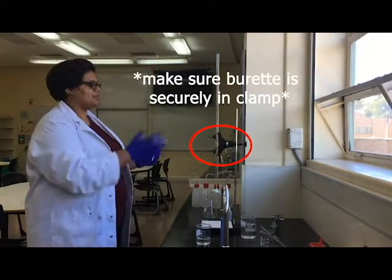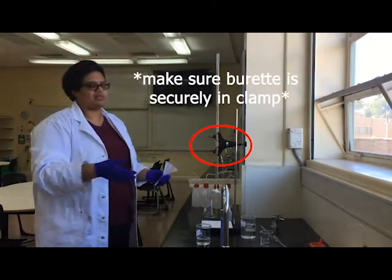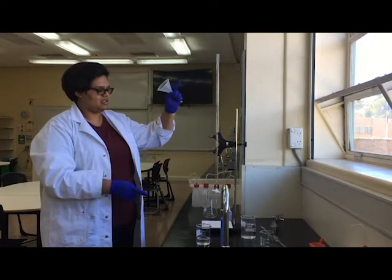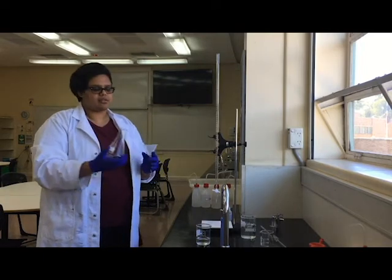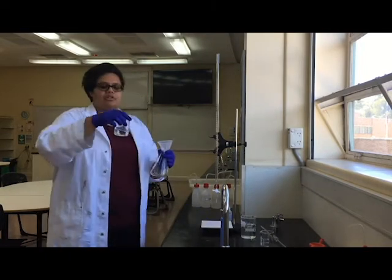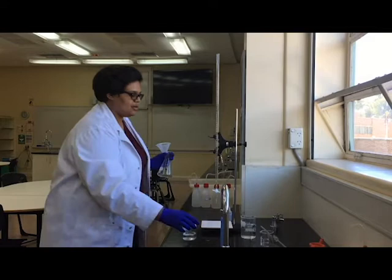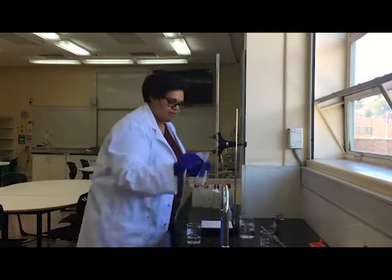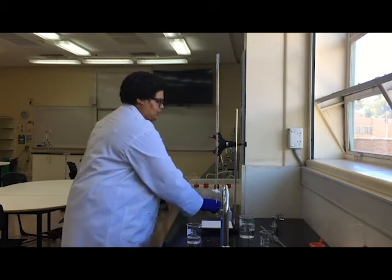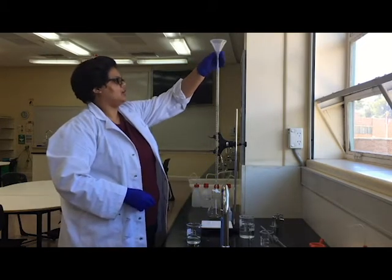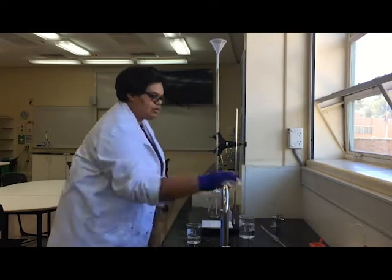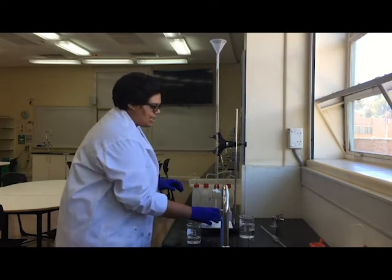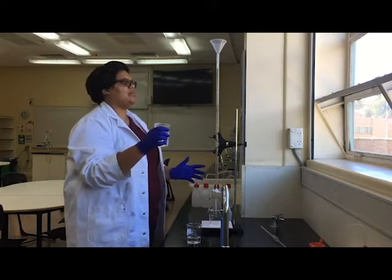Okay, so now we're going to fill up our burette with sodium hydroxide. It doesn't really matter if sodium hydroxide is in the burette or the conical flask, but it's better to put your unknown in the conical flask. Our unknown is going to be our hydrochloric acid because I am much more certain that this sodium hydroxide is 0.1 molar than I am of my hydrochloric acid. I'm going to put a funnel into the burette. I'm going to make sure that this is shut. I'm going to put a little waste beaker underneath just in case, and then I'm going to fill up my sodium hydroxide.